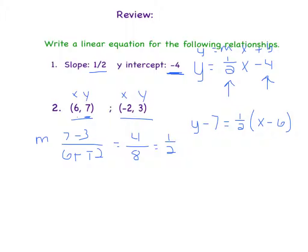However, most of the time, it is required to put it in slope-intercept form. So you're going to take this, and you're just going to simplify. So using the distributive property, y minus 7 equals 1 half x minus 3, and you're going to bring the minus 7 over by adding 7. So y equals 1 half x plus 4. This is the preferred way, because now we can see that it starts on the y-axis at 4, and it goes up 1 half for every x.